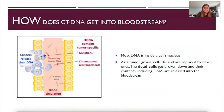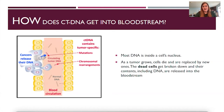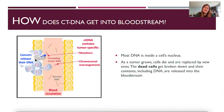How does ctDNA get into the bloodstream? Most of the DNA is inside the cell's nucleus, but as the tumor cell grows, some of those cells actually do die, as all cells do, and they are released into the bloodstream as they're replaced by new ones. Those dead cells get broken down and their contents, including their DNA, get spilled into the bloodstream.